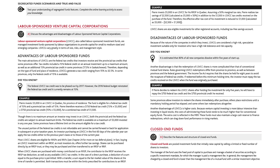Though there is no maximum amount an investor may invest in an LSVCC, both the provincial and the federal tax credits are subject to annual maximum limits. The federal tax credit is available on a maximum of $5,000 invested in any one year. Some provinces have a lifetime limit on the amount eligible for a tax credit. The unused portion of the federal tax credits is not refundable and cannot be carried forward or back. An investor purchasing an LSVCC in the first 60 days of the calendar year can apply the tax credits either to the previous year's taxes or to those of the current year. Most LSVCC shares are eligible for RSPs and RIFs — buying an LSVCC investment within an RSP offers further tax savings.